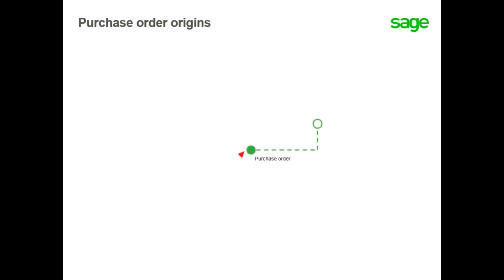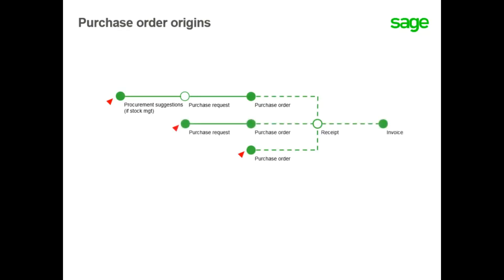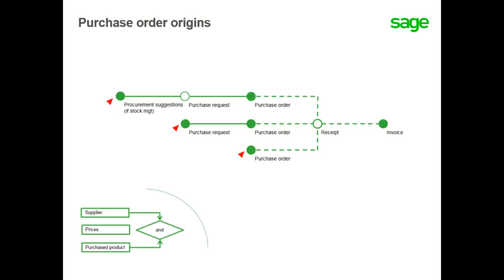Purchase orders can be created via manual direct order entry, also taking into account requirements initiated within the system — procurement suggestions and purchase requests. The purchase flow requires three types of records defined in common data: Suppliers, Products, and Pricelists.